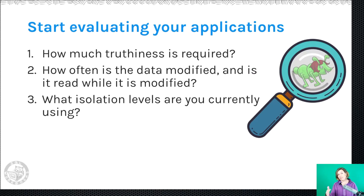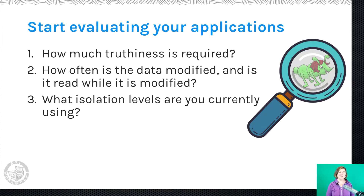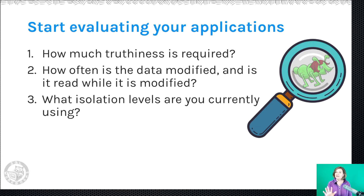The first step on this journey is recognizing that Read Committed lets us return incorrect data and Read Uncommitted is even worse. The first question when you look at your applications is: how much truthiness is required? For some applications I've actually had a CTO say the data doesn't actually have to be right here — they'll sign something saying it's fine. That's fairly rare, but it happens. So what you want to know is: for this application, how important is it that the data is correct? We have a lot of applications and can't just generally change isolation levels on all of them — we want to work with the most critical ones first.